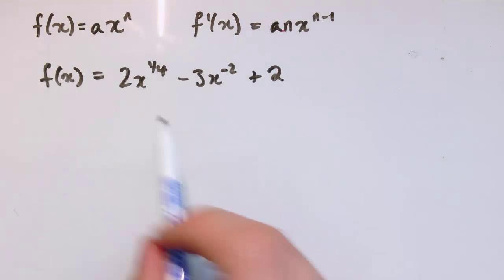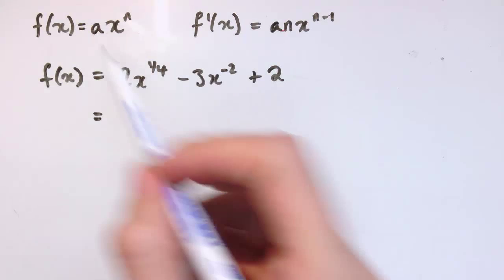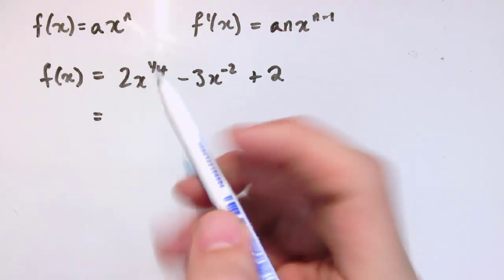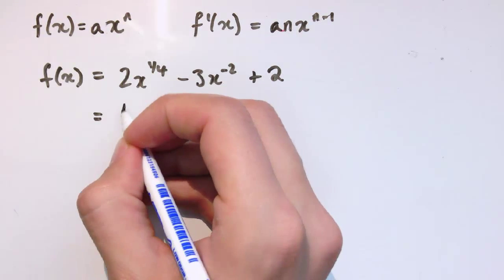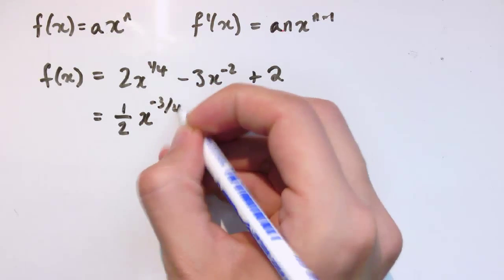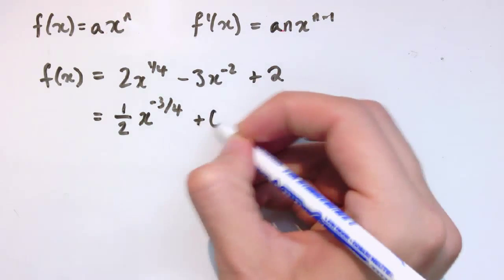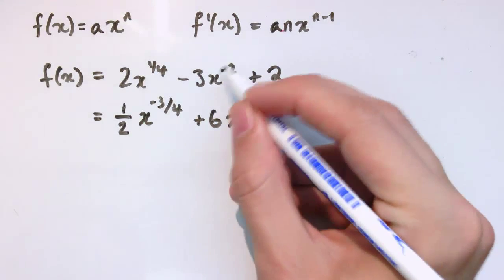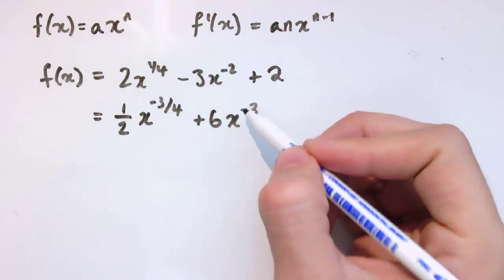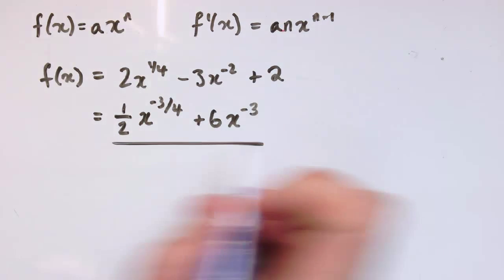Here's another one, 2x to the quarter minus 3x to the minus 2 plus 2. Again, we'll just apply the rules. So, you can see what's happening here. We just pull the number in the index down, multiply it in front, and reduce this number by 1. So, I get 2 times a quarter. 2 times a quarter is 1 half. x to the 1 quarter minus 1, so I get minus 3 quarters. This one here, I pull the minus 2 down in front, so minus 2 times minus 3 gives plus 6, times x to the, and I reduce minus 2 by 1, and get minus 3. Be careful here, people sometimes make the mistake of saying minus 1, but we're still subtracting 1, which makes minus 2 into minus 3. And again, 2 here differentiates to 0, so we don't get any term there. And that's our final answer.